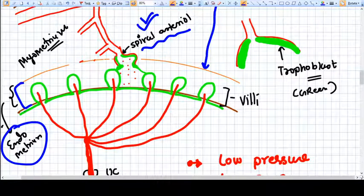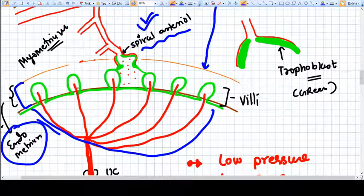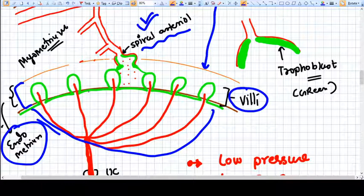Because if this is the placenta, then these are the fetal vessels and the fetal vessels will end into capillaries in the villi. These green things here are the villi. In the villi, the fetal vessels are supplied.